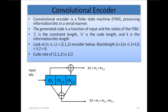In this simple convolutional encoder, input bits enter and outputs are taken as X1 and X2. X1 is the modulo-2 addition of the values in registers MJ and MJ-2. X2 is the modulo-2 addition of the values in shift registers MJ, MJ-1, and MJ-2. Every time an output is taken, the previous value is shifted from one register to the next, and that shifted history is used in the convolutional encoding output.